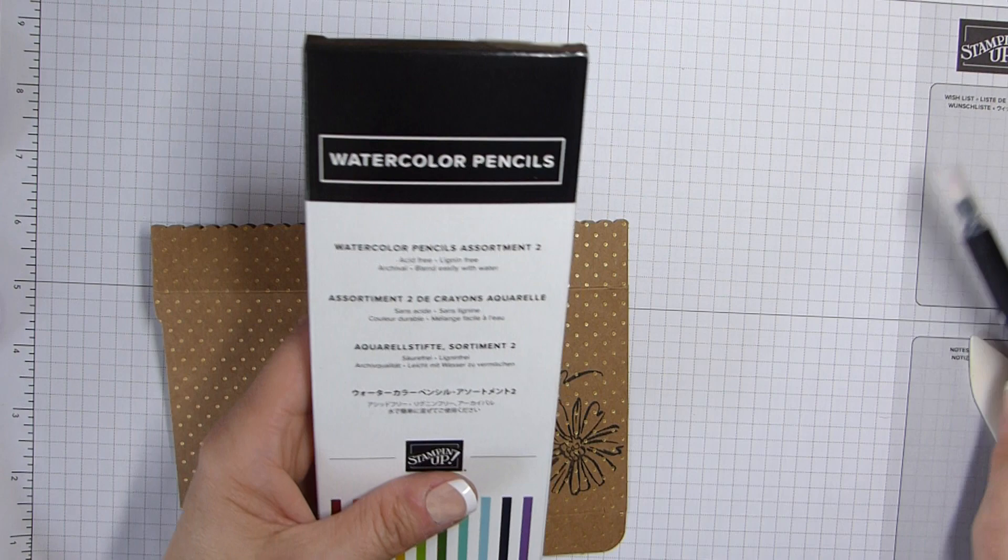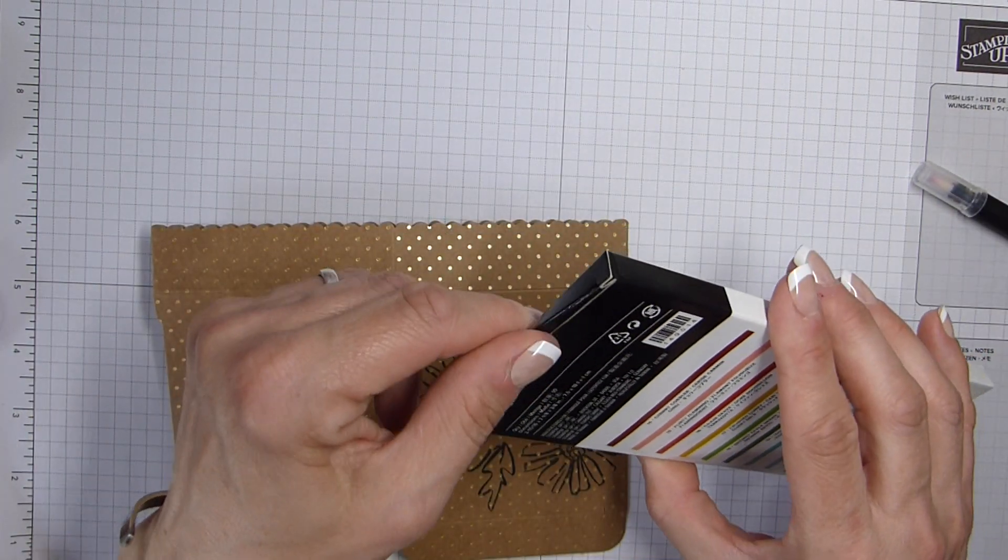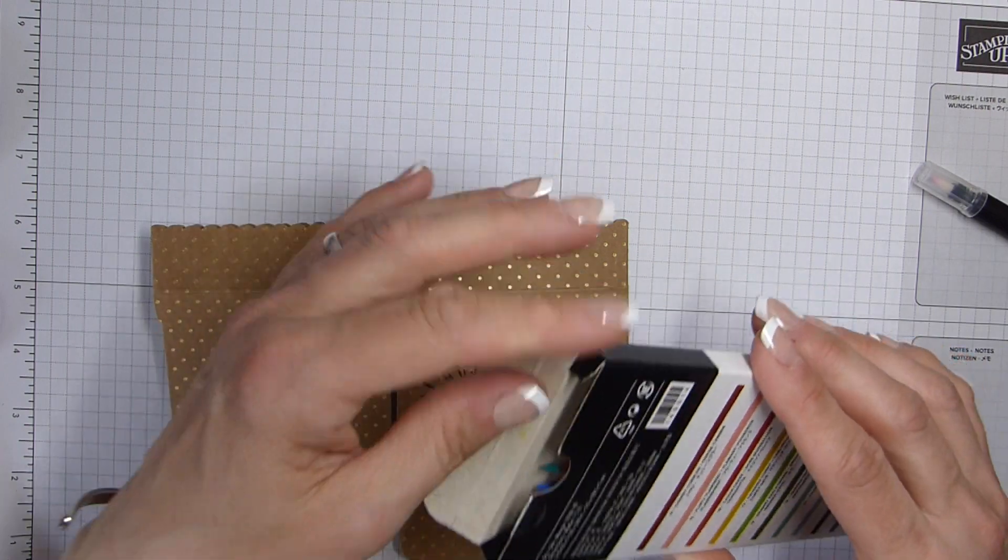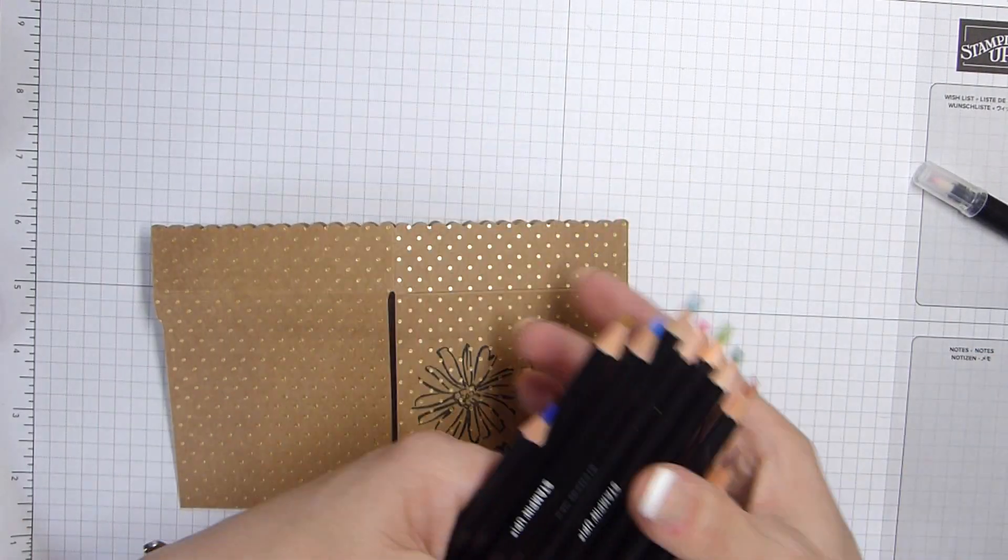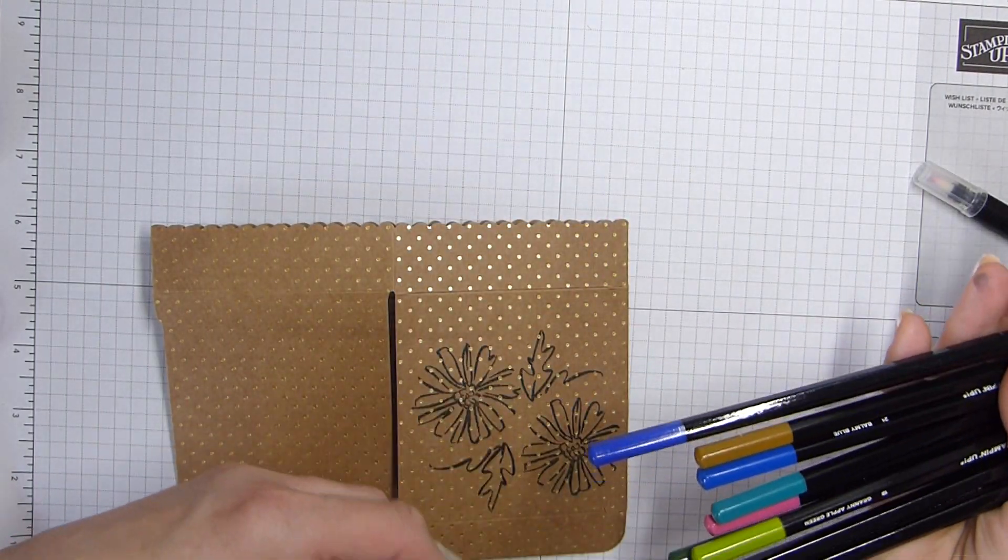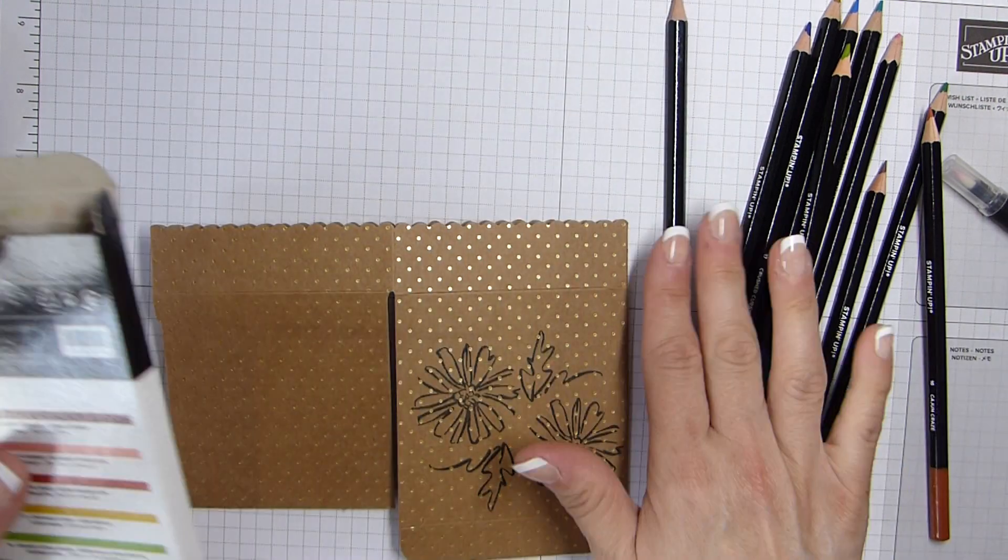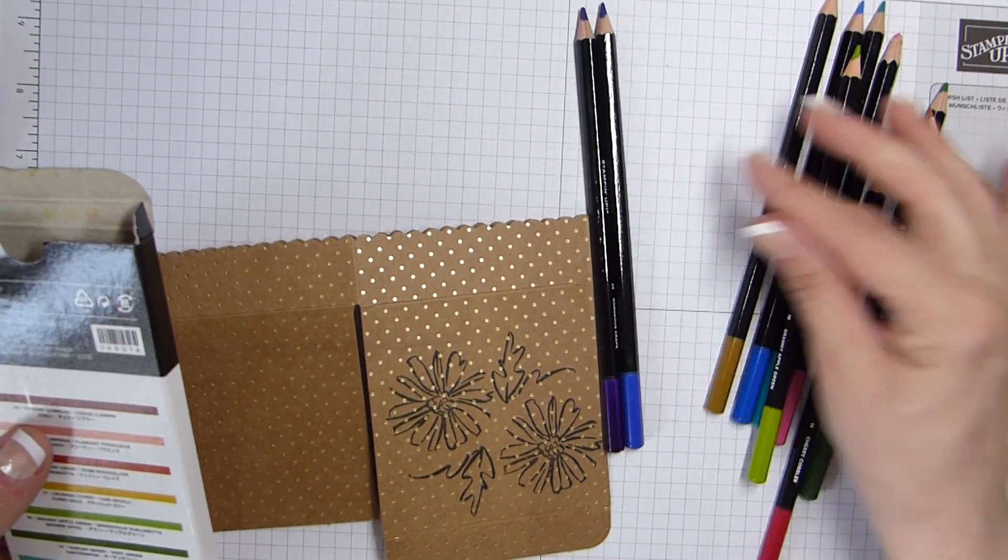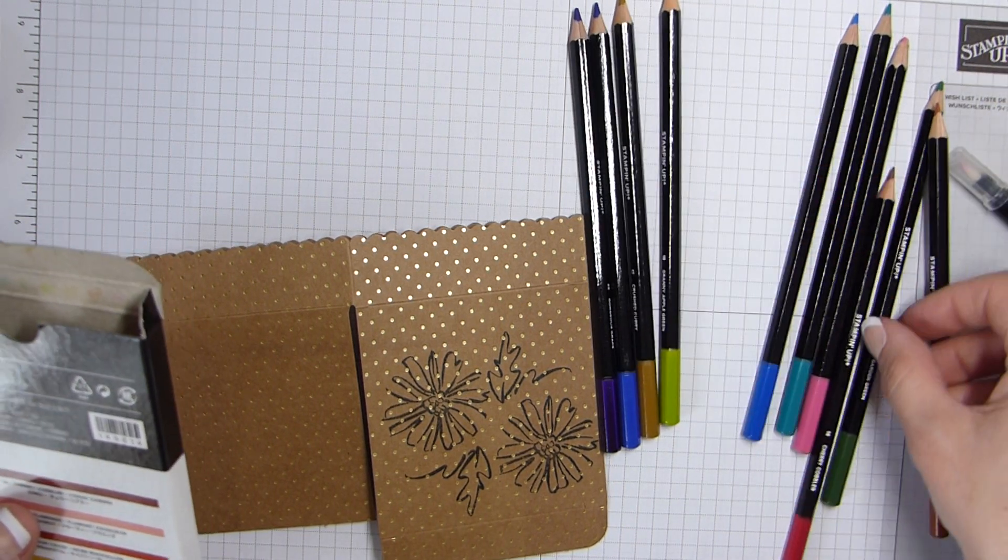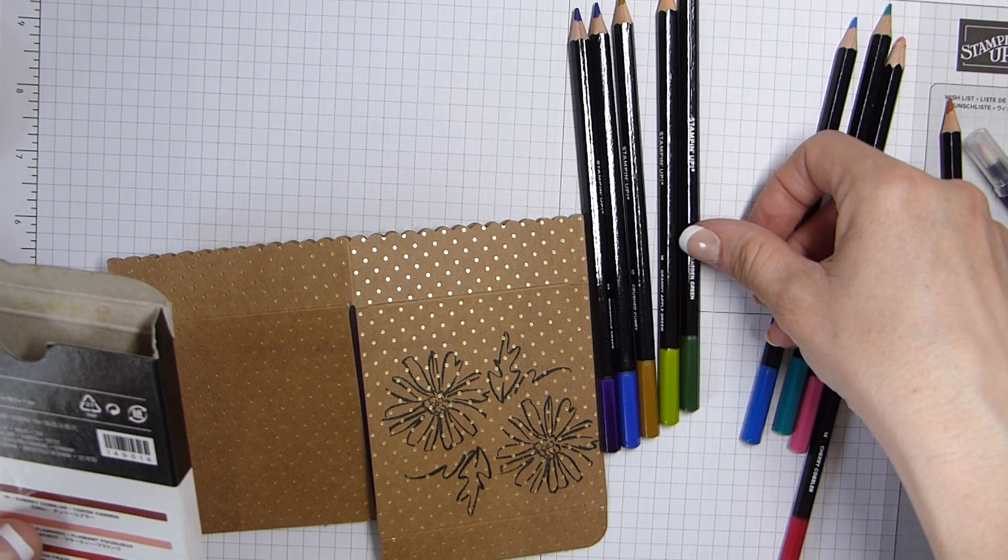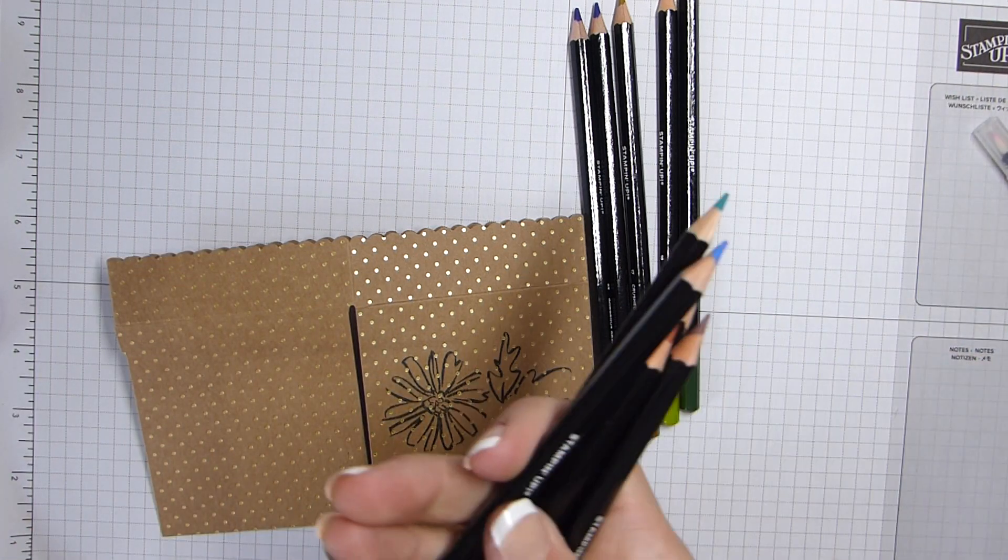And then I'm back in with my watercolour pencils, the assortment two. I haven't mixed them in this time. So same scenario. And for this one, I used the one that's stuck in the corner. So I've got gorgeous grape and night of navy for the flowers. I actually use a little bit of the crushed curry for the centre of the flowers and granny apple green and garden green for the leaves.